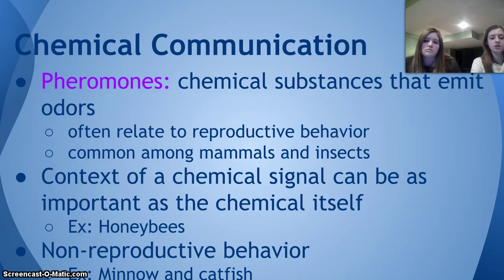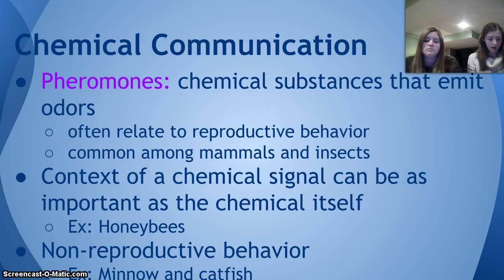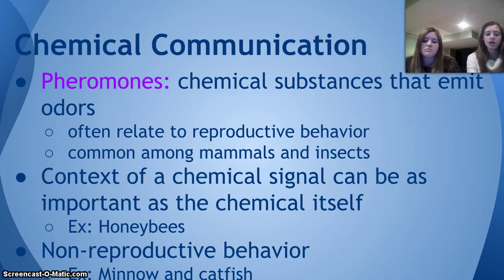The context of a chemical signal can be as important as the chemical itself. For example, honeybees: in the hive, the drones are unaffected by the queen so they can work without being distracted, but once they're outside the hive they are free to mate. For non-reproductive behavior, if a minnow or catfish is hurt, it sends out a pheromone that warns others in its species that there is danger in the area, and those others flee.